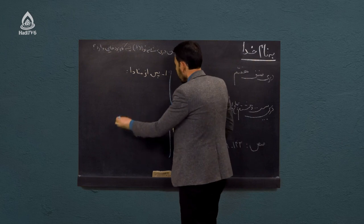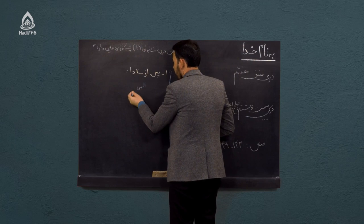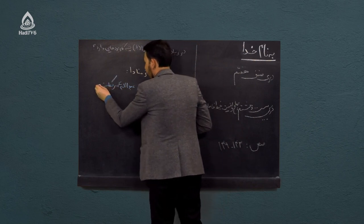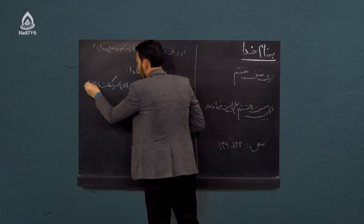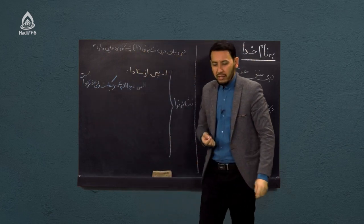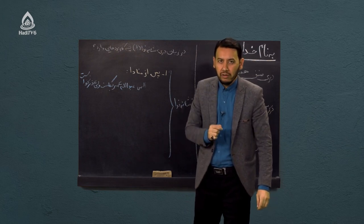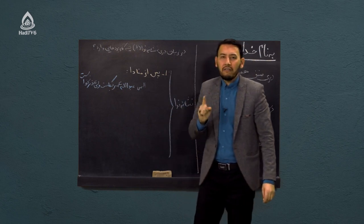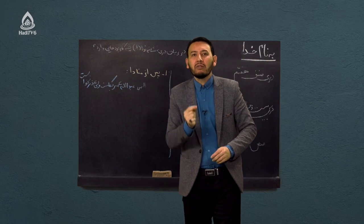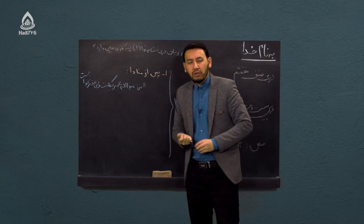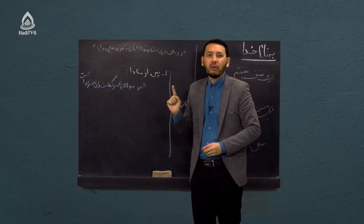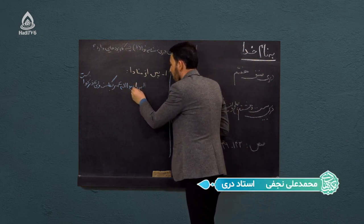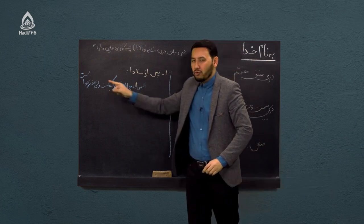مثال می‌زنیم: الهی عبدالله عمر بکاست ولی عذر نخواست. این یک جمله مشهوری است که در مناجات‌نامه خواجه عبدالله انصاری ذکر شده. جمله ندایی است. کدام کلمه در این جمله منادا است؟ کلمه «الهی» می‌شود منادای ما. بعد از این کلمه منادا، نشانه و علامت ندا ذکر می‌کنیم و جمله را ادامه می‌دهیم.